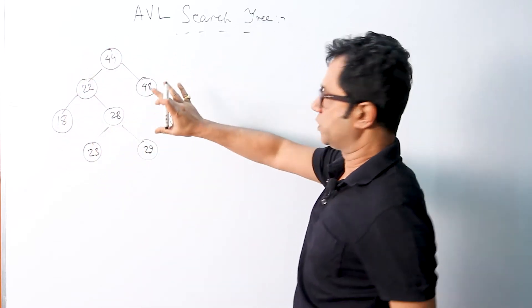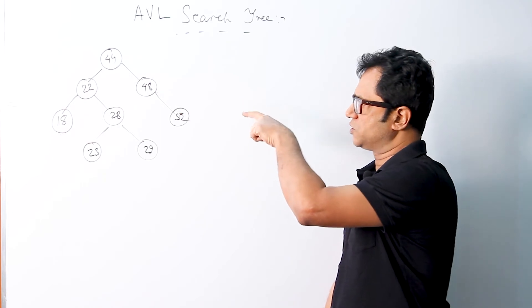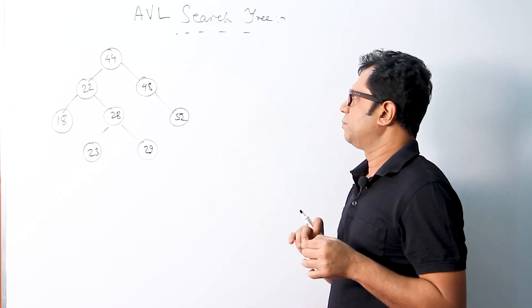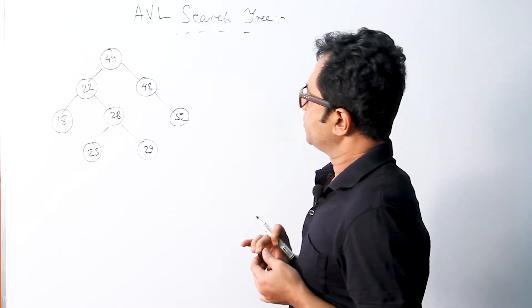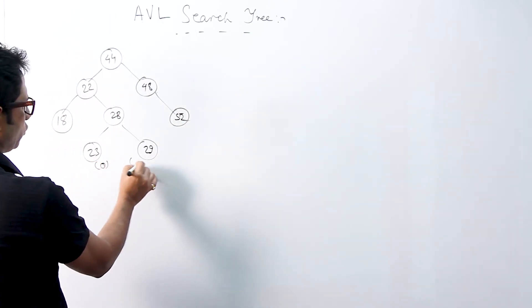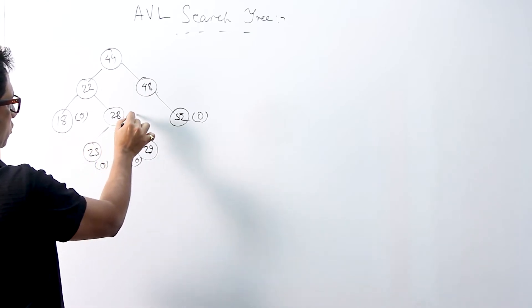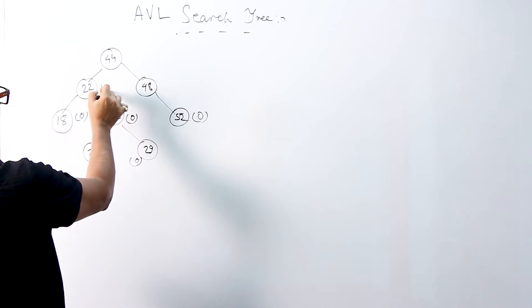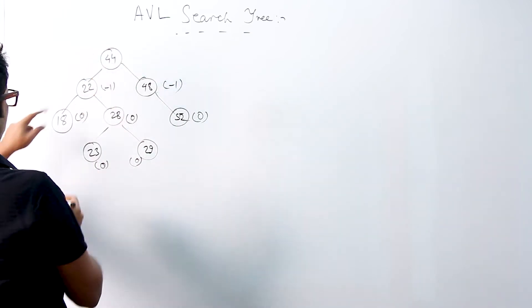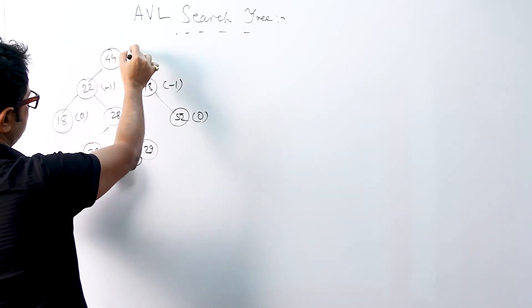Let me verify that this is indeed an AVL search tree by calculating the balance factors of each node. The leaf nodes all have a balance factor of 0. Node 28 has a balance factor of 1 minus 1, that is 0. Node 22 has a balance factor of 1 minus 2, that is minus 1. Node 48 has a balance factor of 0 minus 1, which is minus 1. Node 44 has a balance factor of 3 minus 2, that is 1.